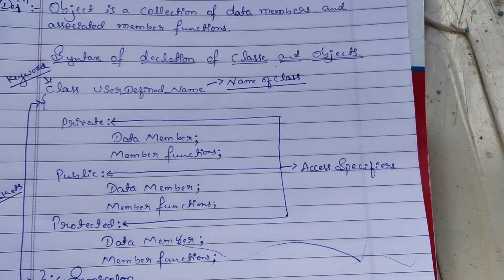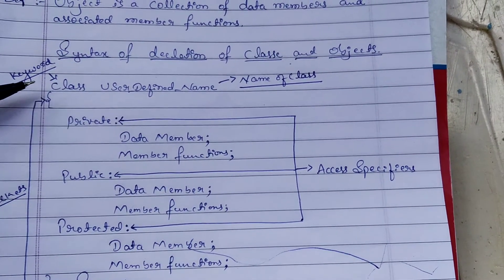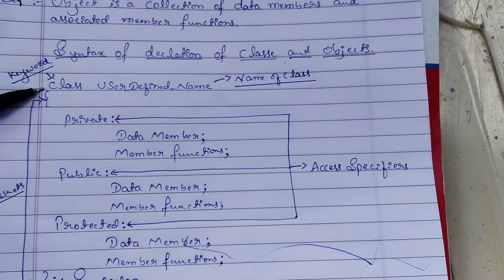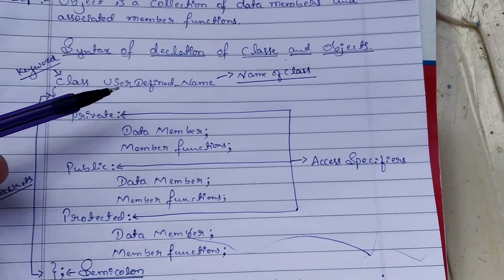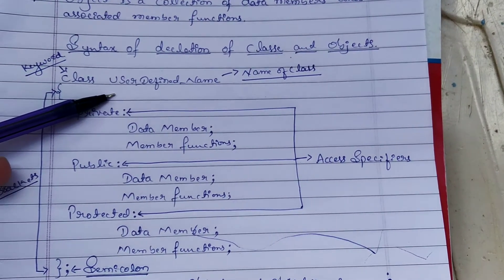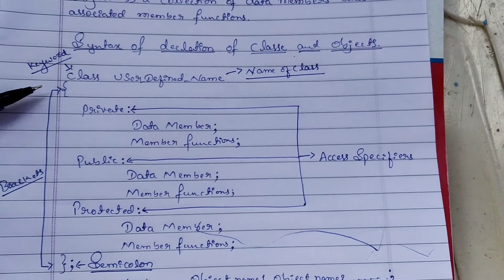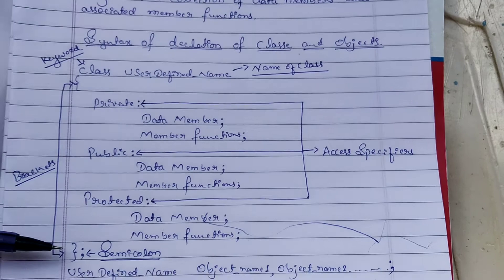Declaration of classes and objects. The class syntax is like this: 'class' is a keyword, followed by a user-defined name as the name of the class, then curly brackets open and close, and a semicolon.